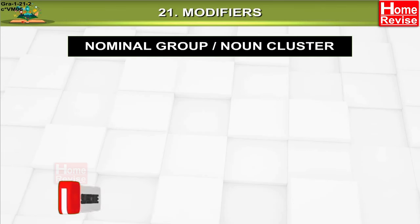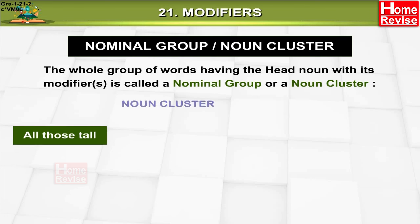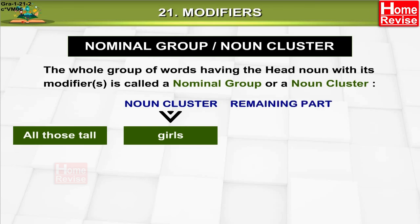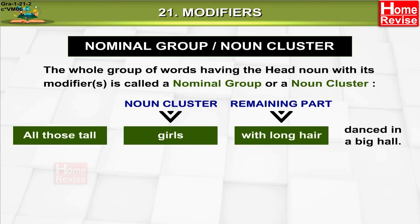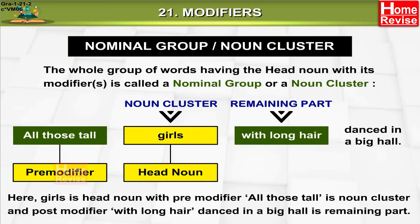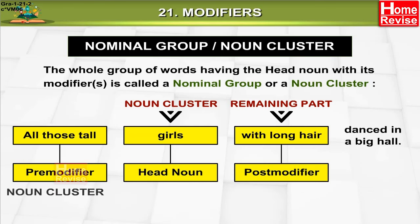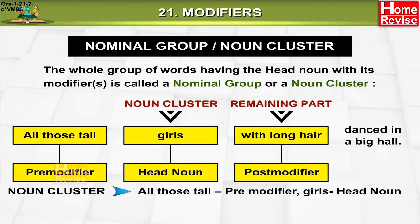Nominal group or noun cluster: the whole group of words having the head noun with its modifier or modifiers is called a nominal group or a noun cluster. Example: 'All those tall girls with long hair danced in a big hall.' Here, 'girls' is the head noun. 'All those tall' is the pre-modifier forming the noun cluster, and 'with long hair' is the post-modifier.